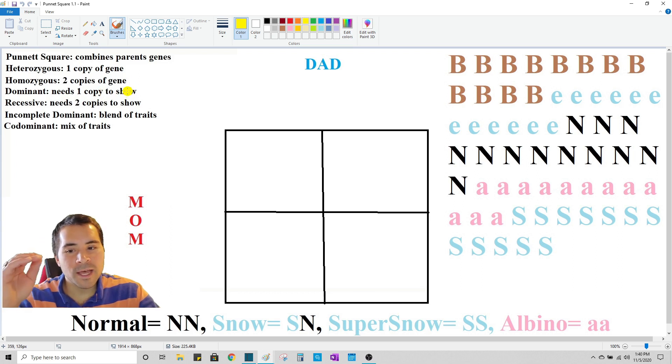Both heterozygous and homozygous come in four different variations or four different expressions. Each one of those genes can be dominant. They can be recessive. They could be incomplete dominant or they could be codominant. So there's four different expressions that a heterozygous gene can take on or four different expressions that a homozygous gene can take on.